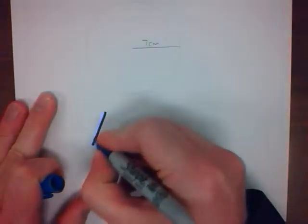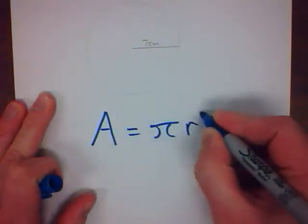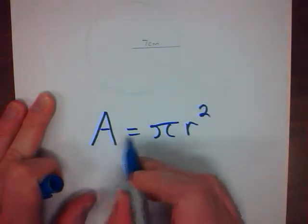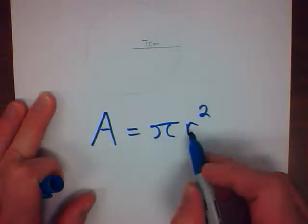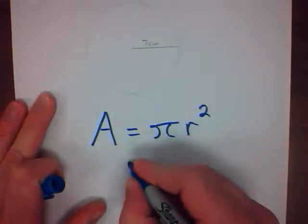This is the formula that you're going to need. Area is equal to pi radius squared. This is how you would do the work.